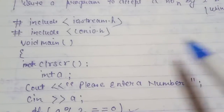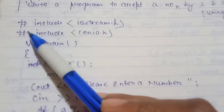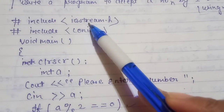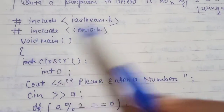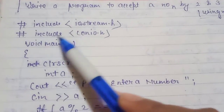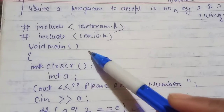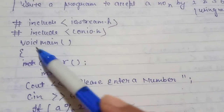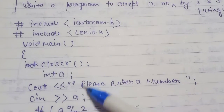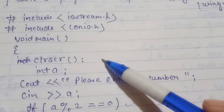First, we introduce the program with the header files: #include <iostream.h> and #include <conio.h>, which we use in C++. Then we write void main() and start the main function. The opening curly brace starts here, and then clrscr() is called to clear the output screen.